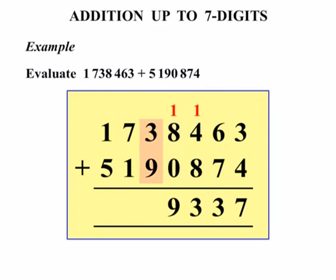3 plus 9 is 12. So for 12, we put the 2 down, carry the 1. 1 plus 7 is 8, plus 1 more makes 9. Finally, 1 plus 5 is 6.